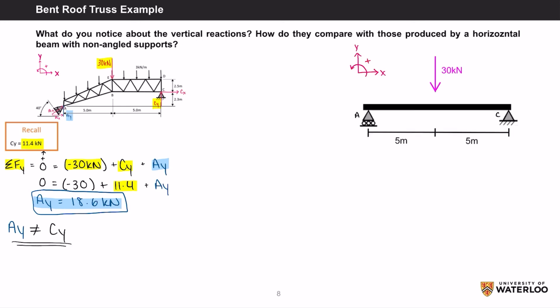If we were to compare it to the same system but with a straight beam and non-angled supports, the reaction forces for AY and CY should be equal. If you take the moment about C, it equals zero, which equals negative AY times 10 meters plus positive 30 kN times 5 meters as the point load is in the center of the beam. This gives you an answer of 15 kN.